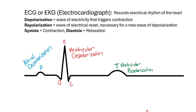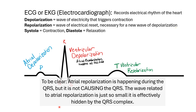The first thing students generally notice is: we have ventricular repolarization, but where is the atrial repolarization? Atrial repolarization is happening at the same time as ventricular depolarization. On a multiple choice test, you would pick ventricular depolarization as what's occurring during the QRS, because that is of a greater magnitude.